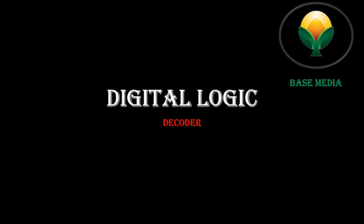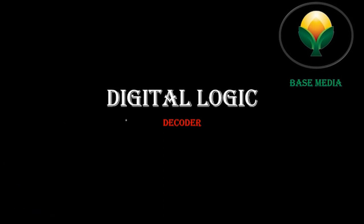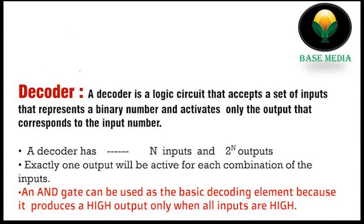From digital logic, we see the decoders. A decoder is a type of electric circuit that accepts a different set of inputs that represents a binary number and activates only the output that corresponds to the input number. The decoder is a type of combinational digital logic circuit that accepts a different set of inputs and activates only the output corresponding to the input number.